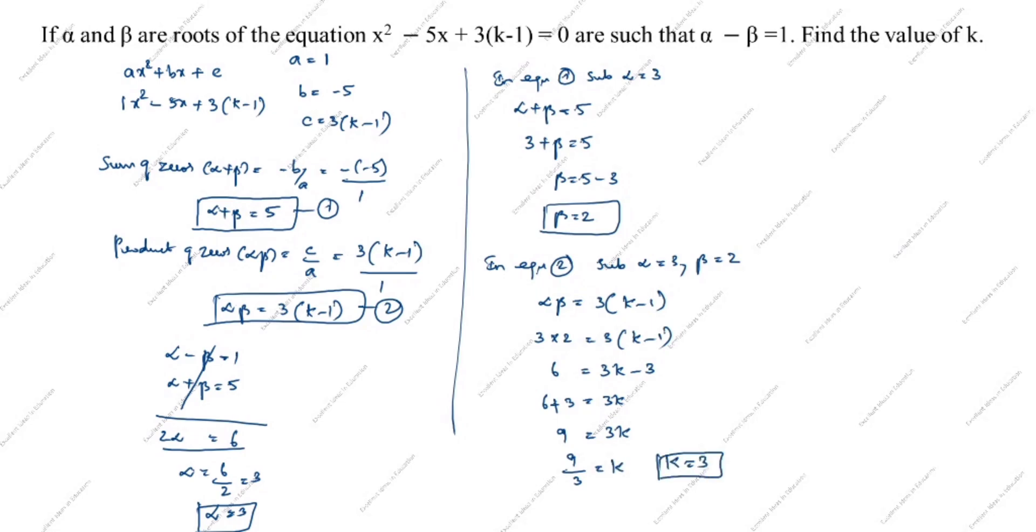What is k value? k equals 3. What we need to find? Find the value of k. So k value is 3. Thanks for watching this video.